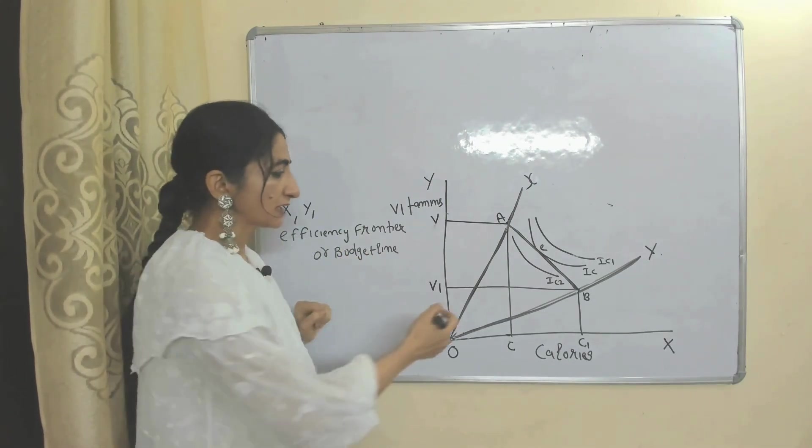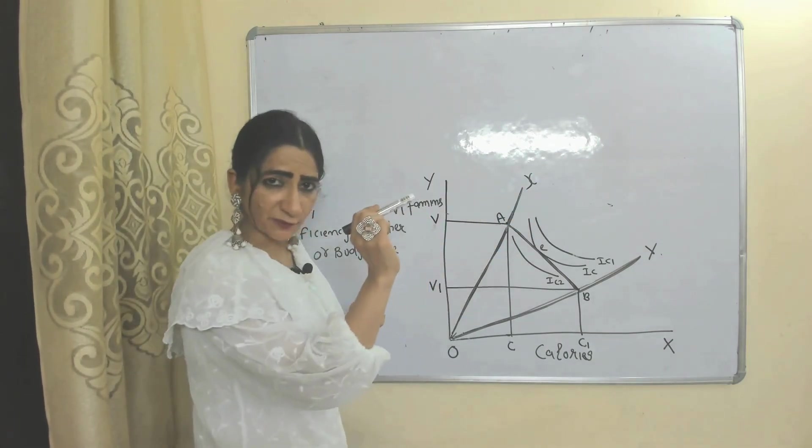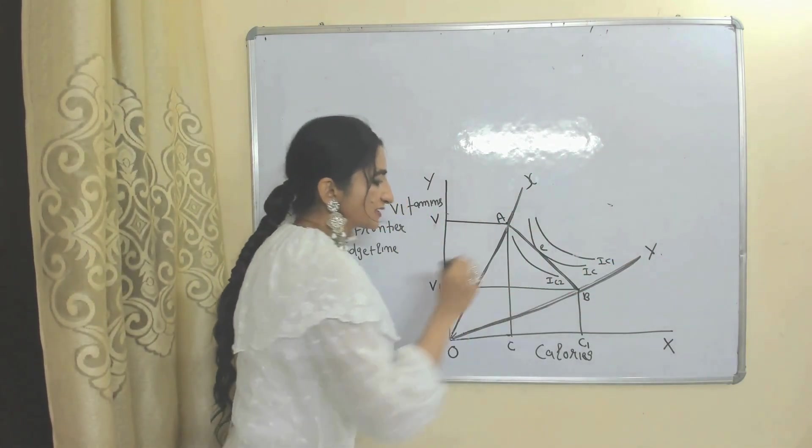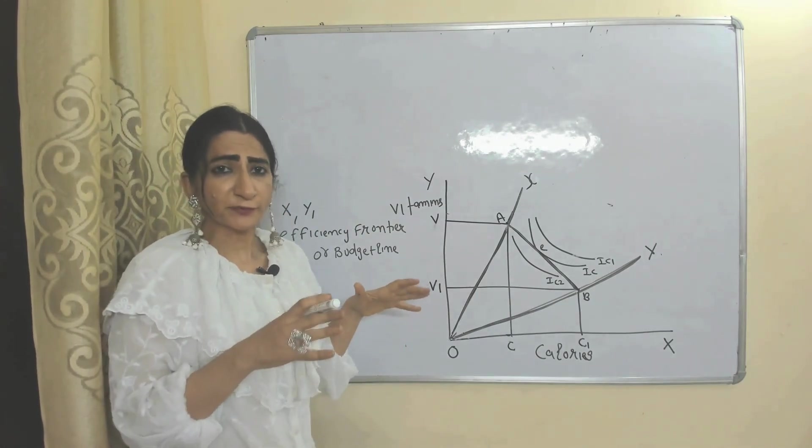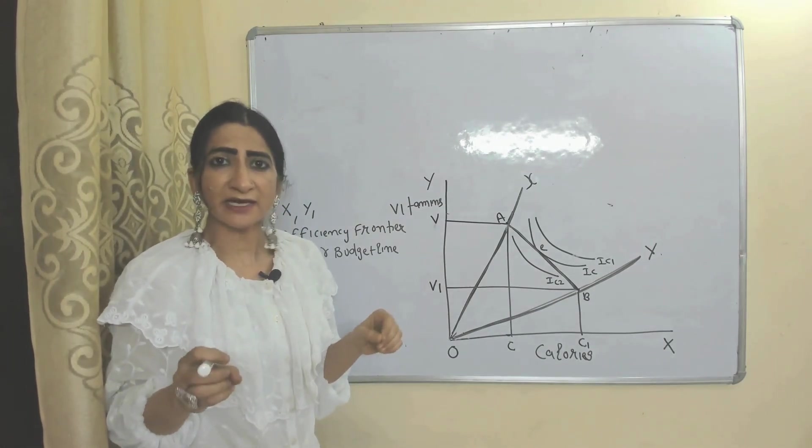Here we have two foods, X and Y. This line represents food X, this line represents food Y. Both foods give us vitamins and calories.